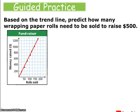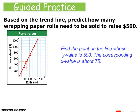Based on this trend line, predict how many wrapping paper rolls need to be sold to raise $500. We find the point on the line whose y value is 500, and the corresponding x value is about 75. Using the trend line enabled us to make a prediction or draw conclusions about the data.